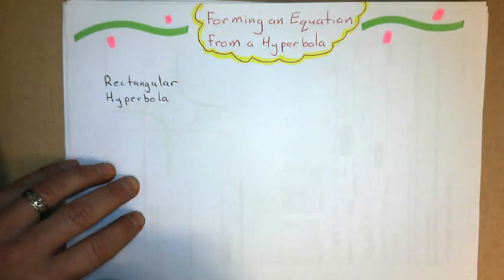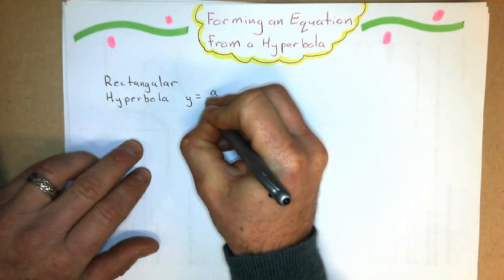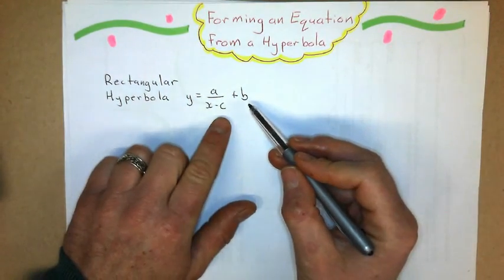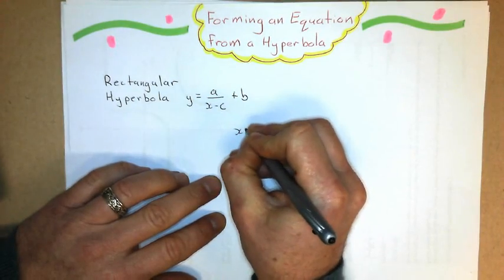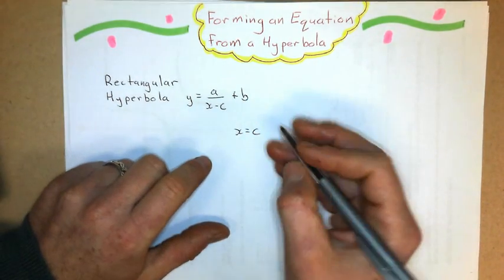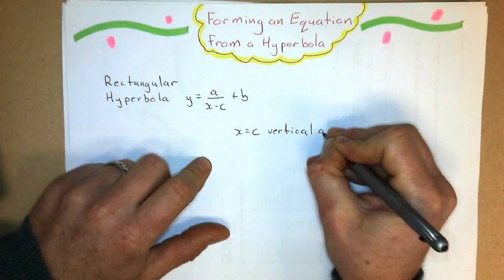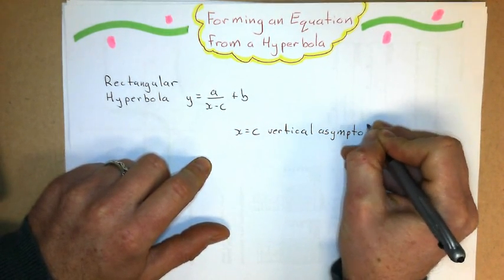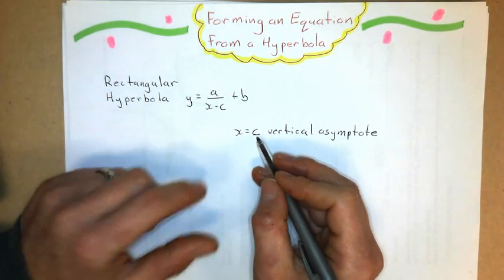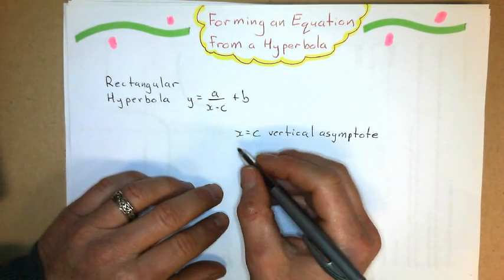And the general form of rectangular hyperbola, y equals a over x minus c plus b. And these two things tell us something. These two constants tell us what the asymptotes are. x equals c is the vertical asymptote. So if c is 4, then x equals 4 is the vertical asymptote. And b is the horizontal asymptote.